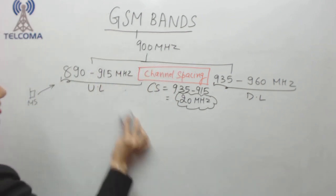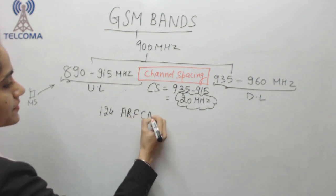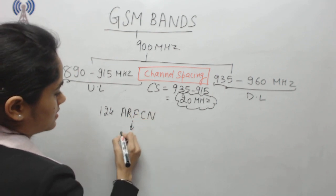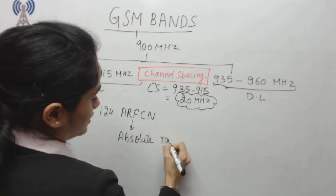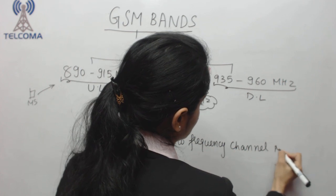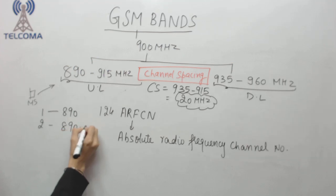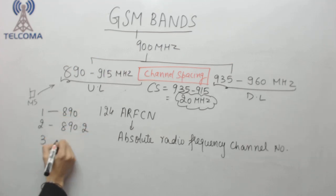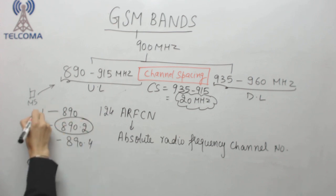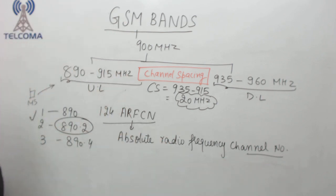That means in the 900 megahertz band we have a total of 124 ARFCNs — Absolute Radio Frequency Channel Numbers. This is the total number of channels. For example, ARFCN 1 corresponds to frequency 890 MHz, ARFCN 2 to 890.2 MHz (since we leave 0.2 megahertz as spacing between carriers), ARFCN 3 to 890.4 MHz, and so on.